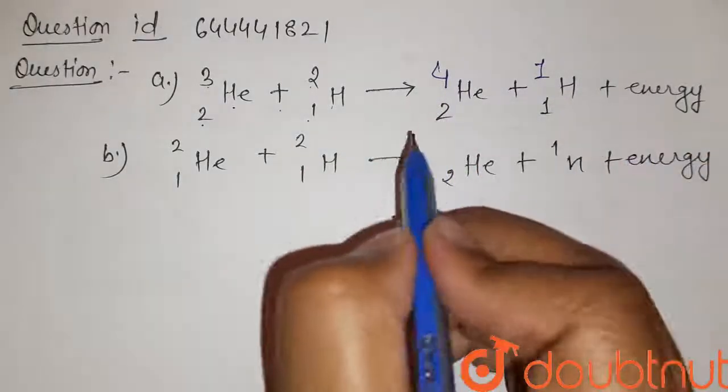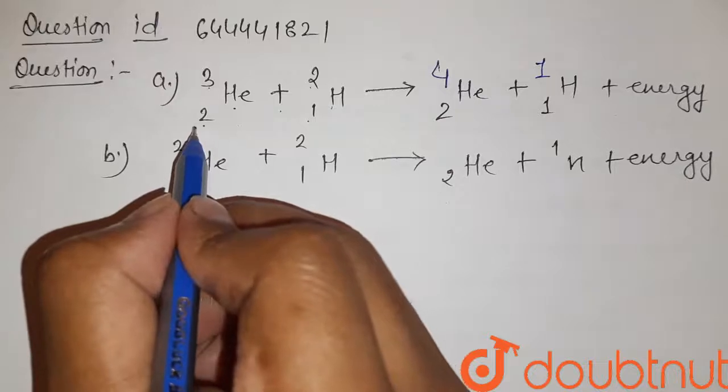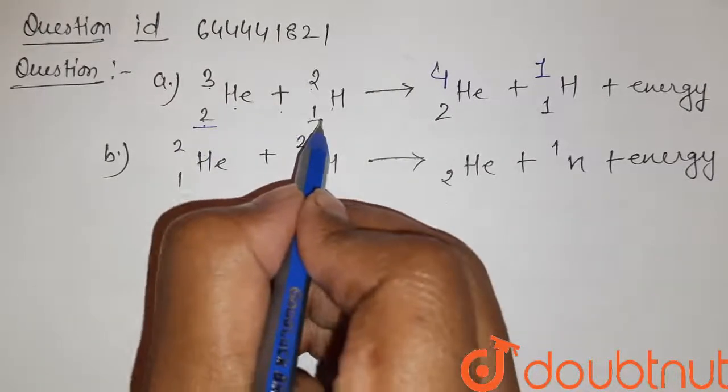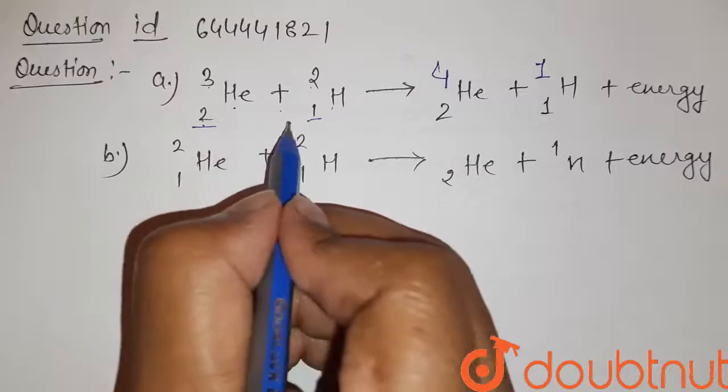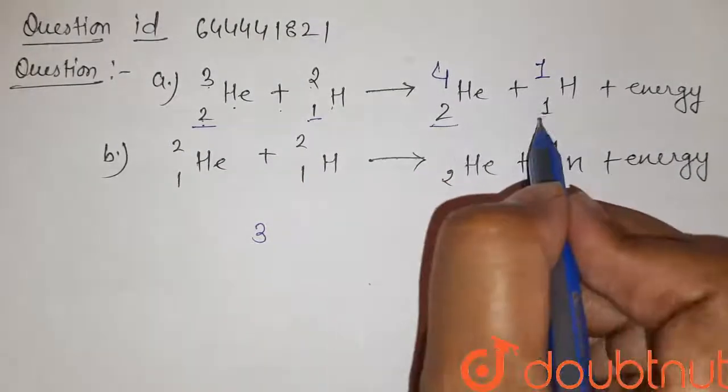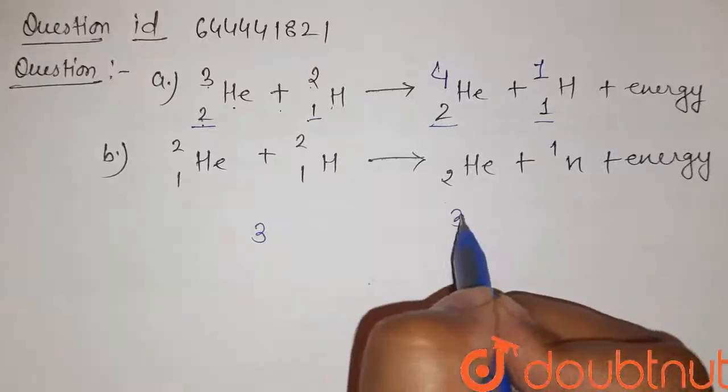Now we can check the total number of protons here are 2 plus 1. So here our total number of protons is 3 and here 2 plus 1, here also 3.